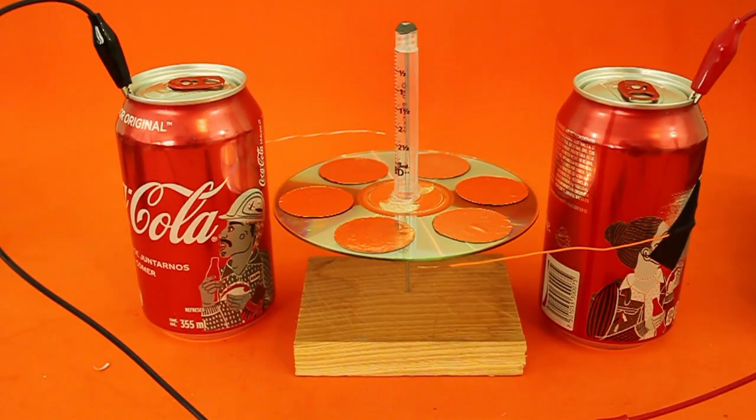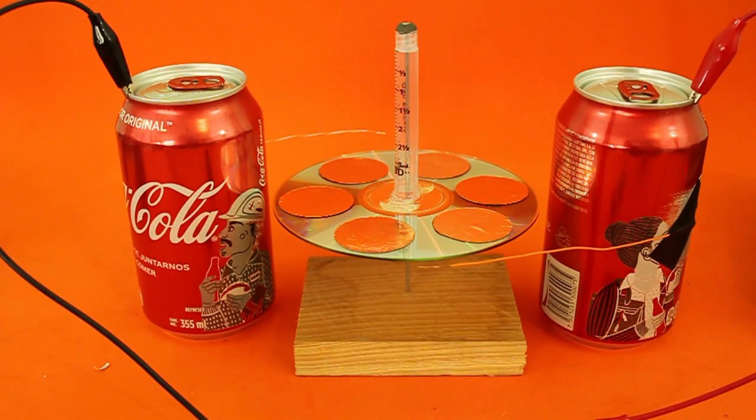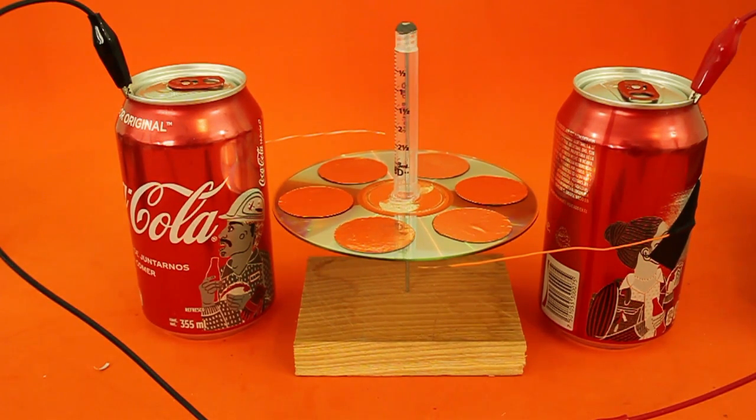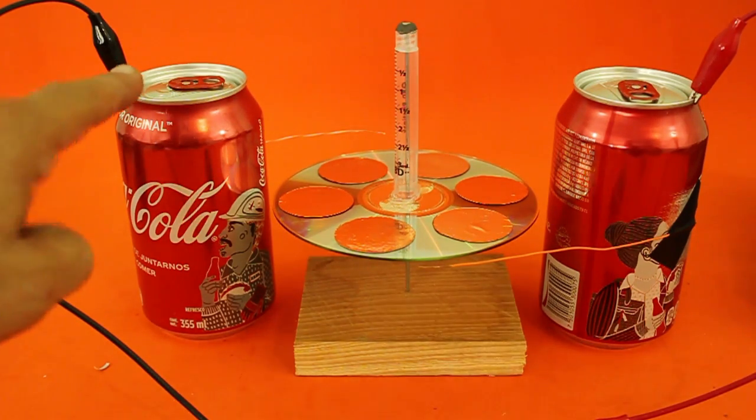Finally you need to place a couple of soda cans, aluminum cans, at each side of the rotor without touching it, at a distance of around 5 to 10 millimeters. And you need to connect the high voltage power supply to the cans, positive terminal and negative.